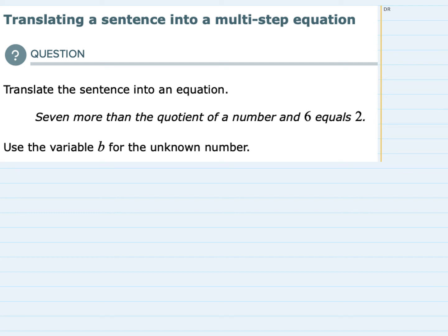Hello everyone. In this video I'll be helping you with the Aleks problem type called translating a sentence into a multi-step equation. We're asked to translate the sentence: seven more than the quotient of a number and 6 equals 2, and to use the variable b for our unknown number.